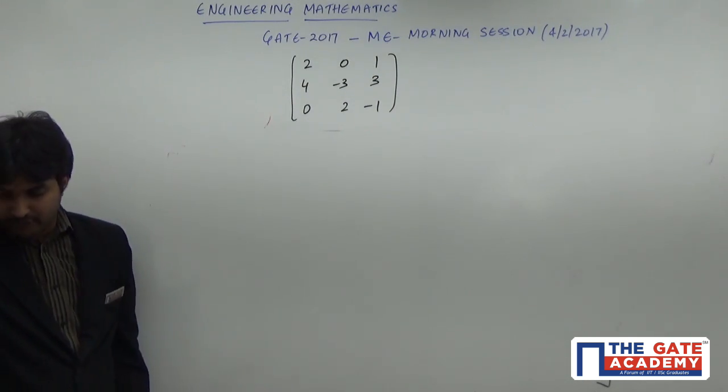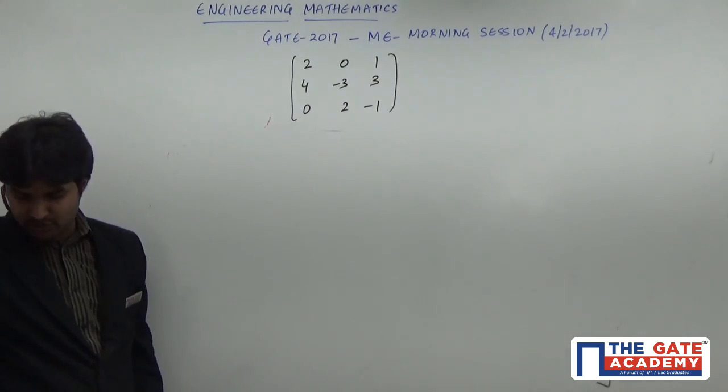We have to find the product of the eigenvalues of the given 3 by 3 matrix: [2, 0, 1; 4, -3, 3; 0, 2, -1].